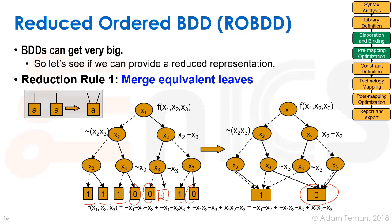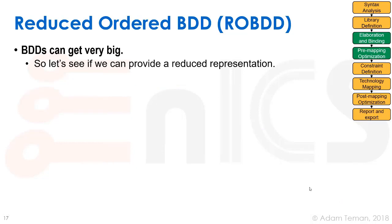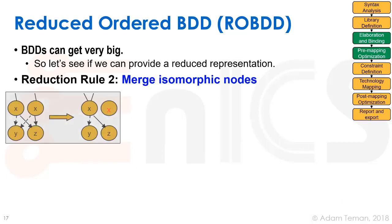That was a somewhat trivial step, but it already reduced at least the output level. Instead of having 2 to the power of n leaves, we only have two leaves. We still have the same number of internal arcs, so it probably didn't reduce much yet, but it will help us in a moment.